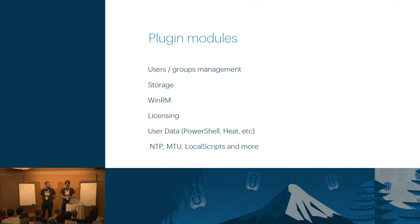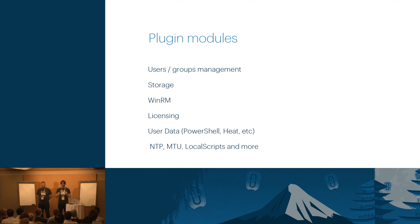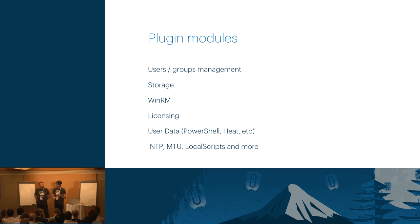It handles WinRM, which is basically the equivalent of OpenSSH in the Microsoft context. It takes care of creating a listener so you can directly use HTTPS to manage your node as long as you have a username and password. It also allows password-less authentication using X.509 certificates. Since Kilo, you can create key pairs — either SSH key pairs or X.509 key pairs — and for Windows machines you can use those to have password-less authentication, which is very useful for automation.